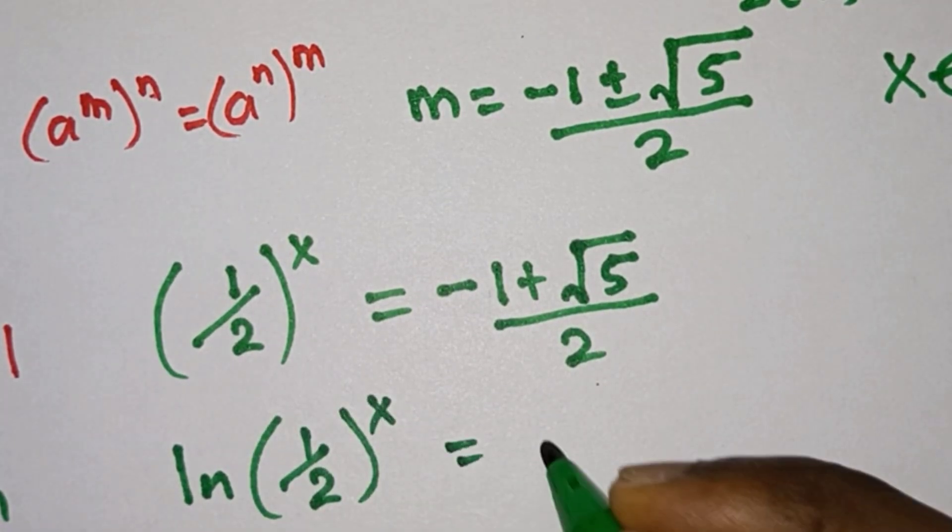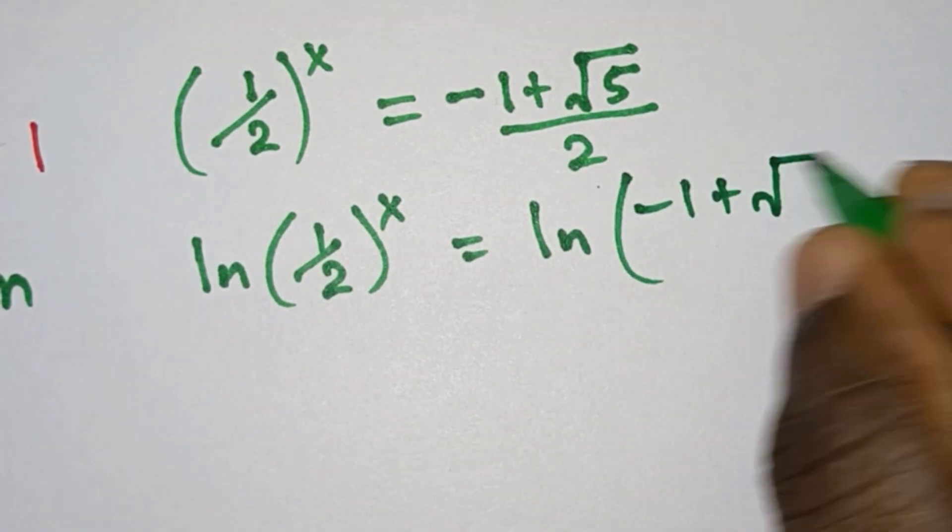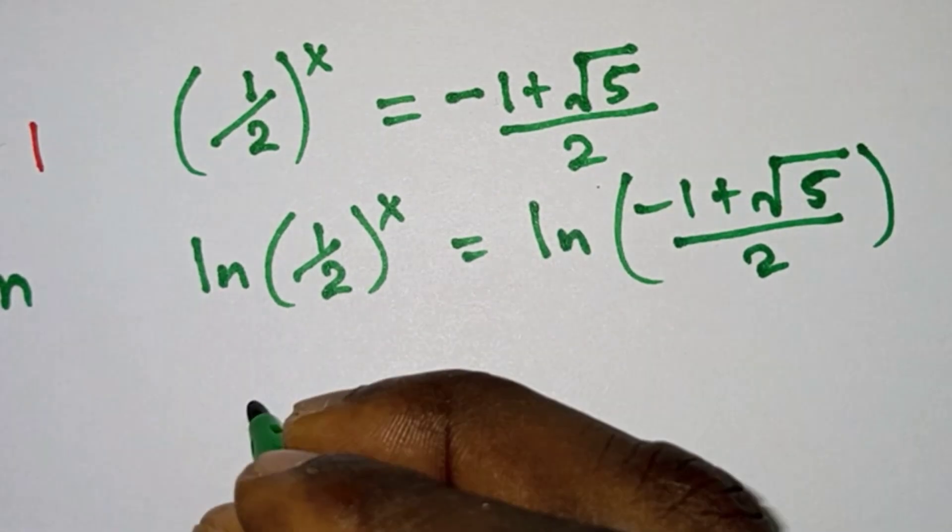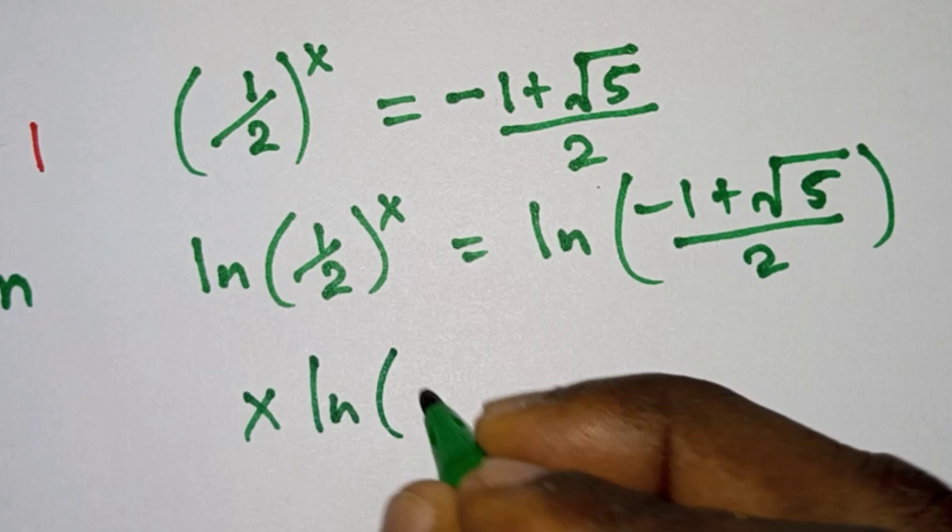Now let's introduce ln on both sides of the equation. So we have x·ln(1/2) = ln((-1 + √5)/2).